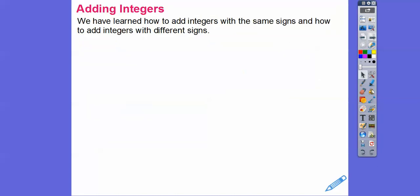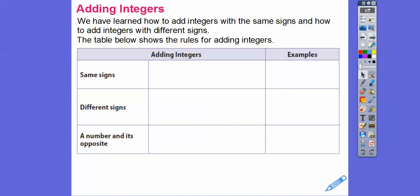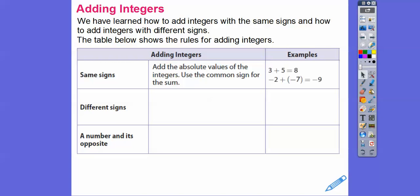We've learned how to add integers with the same sign and how to add integers with different signs. Here's a table that shows the rules for adding integers. If they have the same sign, we add their absolute values and use the common sign they have. For example, 3 plus 5 equals 8. And negative 2 plus negative 7: the absolute value of 2 plus the absolute value of 7 is 9, and we take the sign they both have, so it's negative 9.